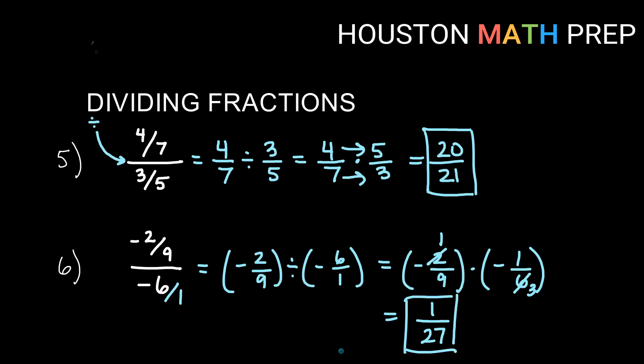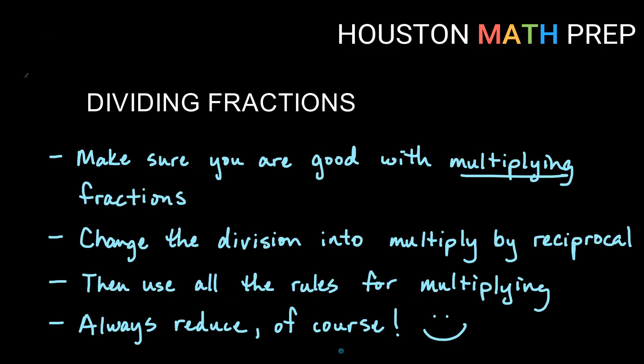So those weren't too bad, I hope. Some things to remember dividing with fractions. You got to make sure you know how to do the multiplying fraction stuff first, where you multiply straight across and how to figure out your signs. We're going to change that division into a multiply problem just by changing the second number there into the reciprocal. And then you'll just use your multiply rules for multiplying with fractions. Of course, always reduce that answer. Hope this helped you guys. Thanks a lot.